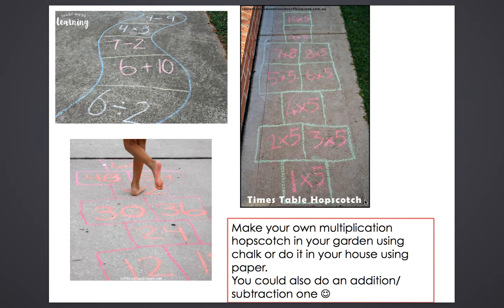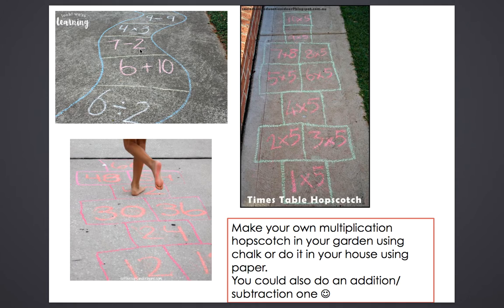This next activity is something you might like to do outdoors. If you've got some chalks at home, you could make your own multiplication hopscotch in your garden. When you land on each square you say the answer to the times table — five, ten, fifteen, twenty, twenty-five, thirty, and so on. Or you could do an obstacle course with different addition and subtraction questions. If you haven't got chalks, just write the questions on paper and lay them out in your house as a hopscotch course.